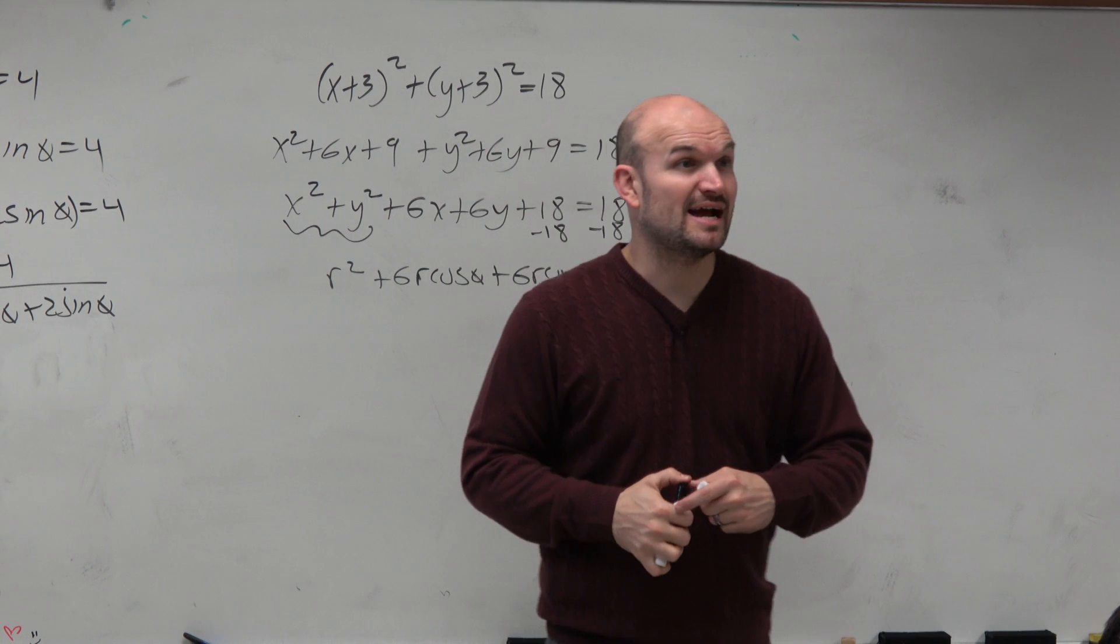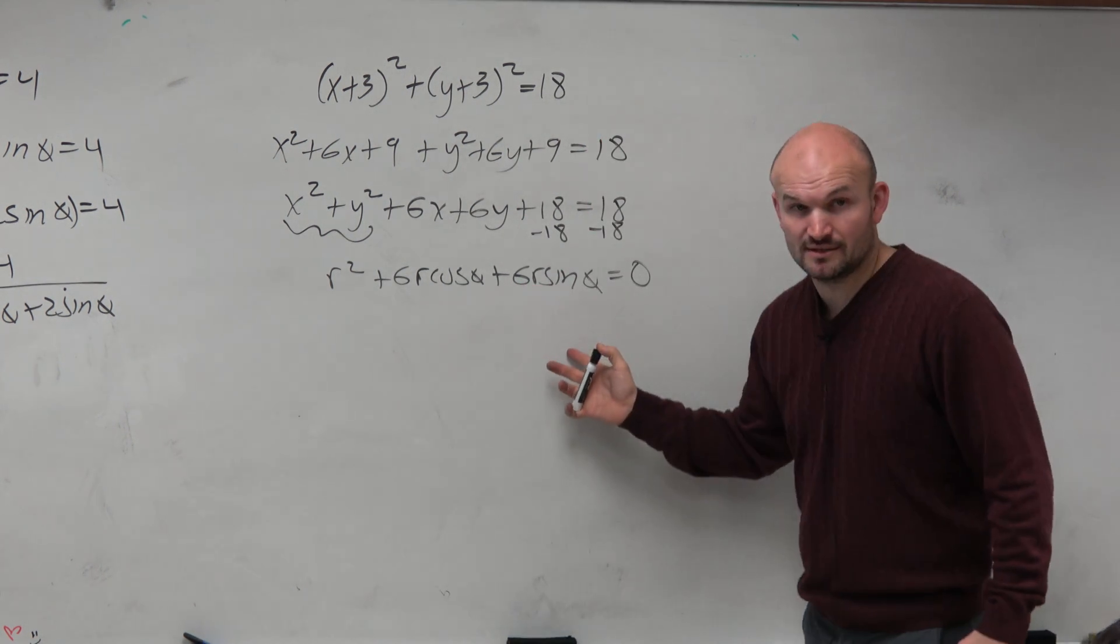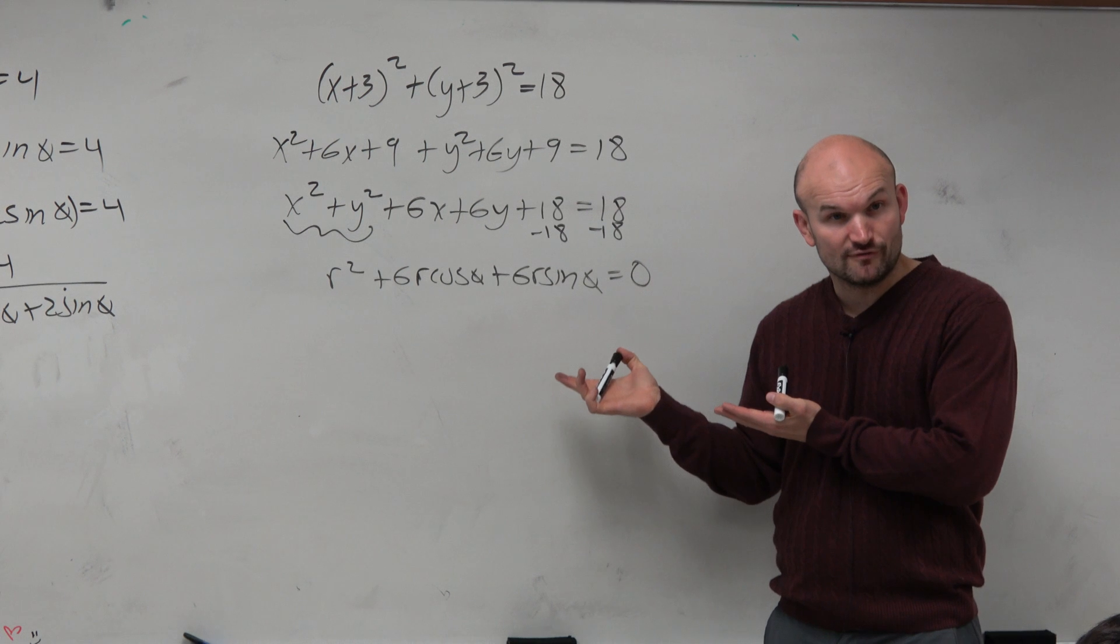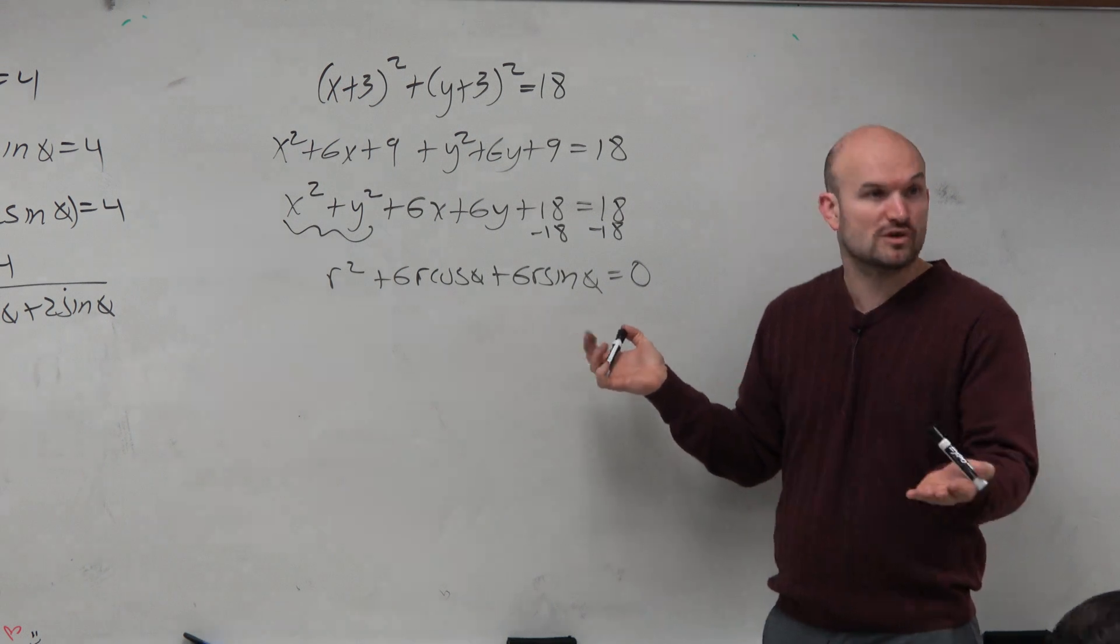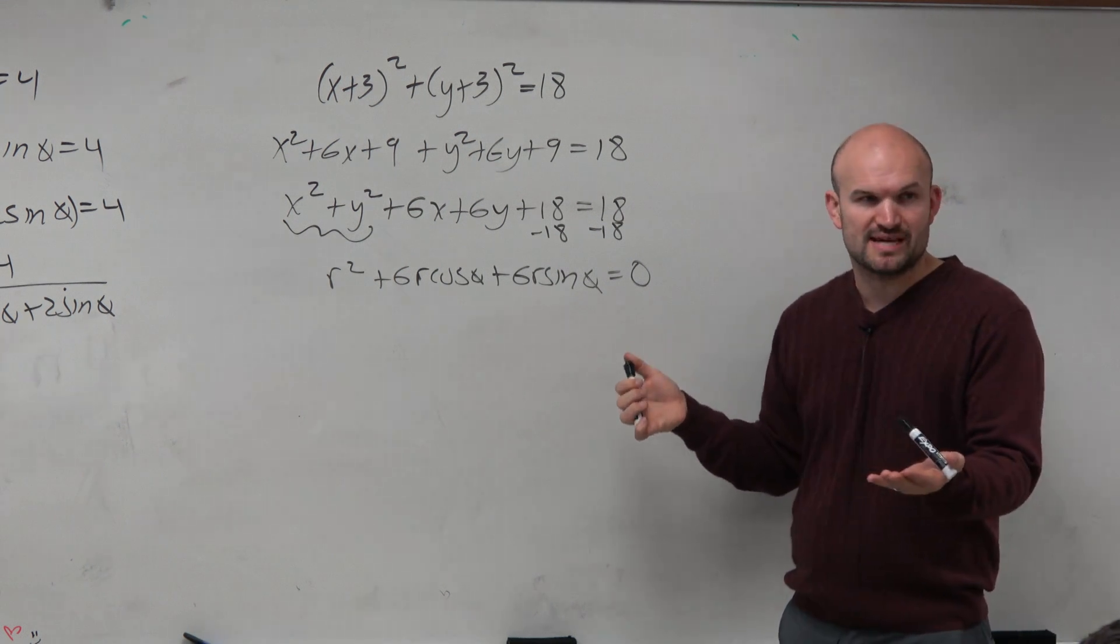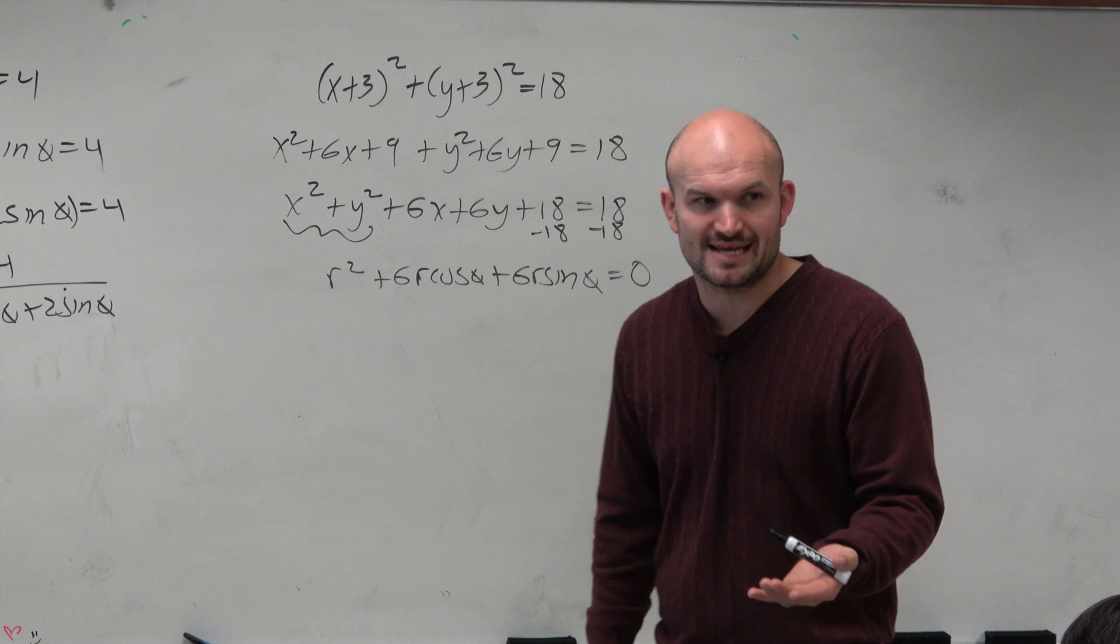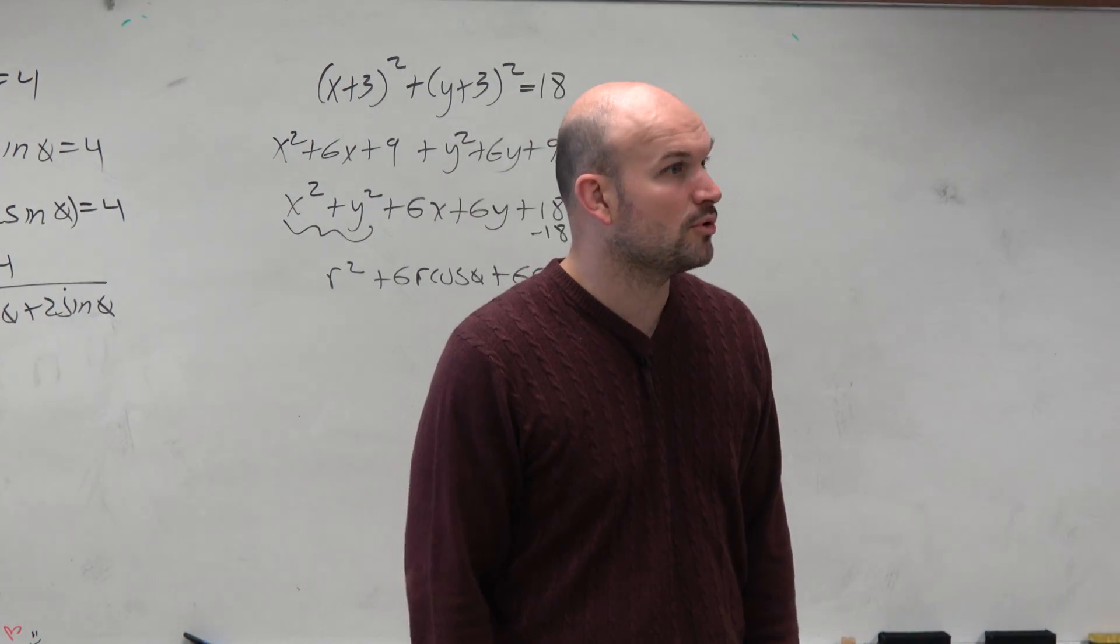So again, now I have three r's. I have r squared and then two r's here. Now again, is this technically converted to polar form? Of course it is, right? But let's pretend this is not going to be on our multiple choice answer list. So we need to work it out a little bit more.